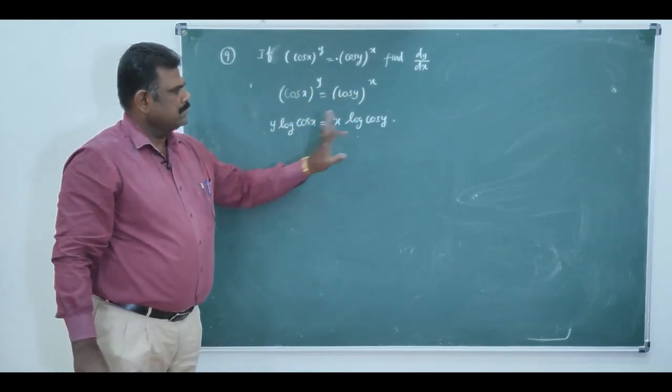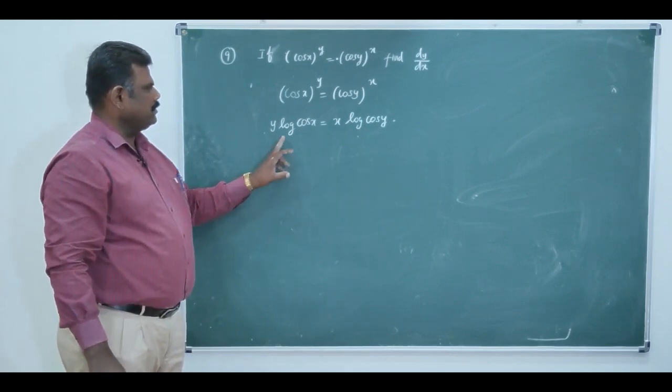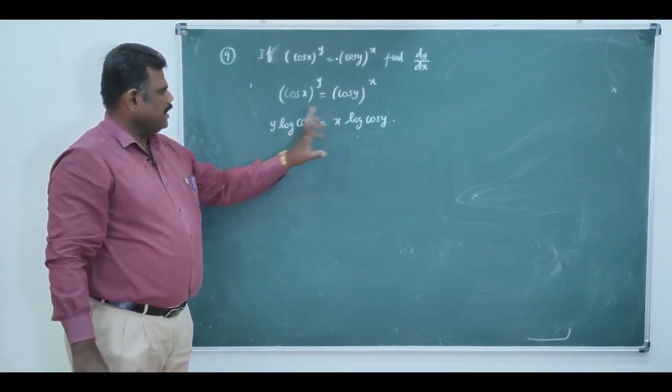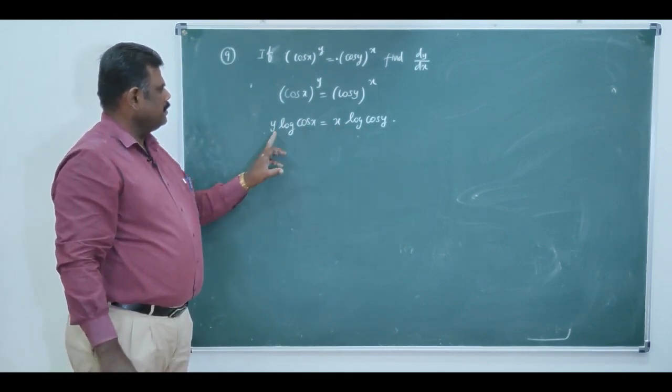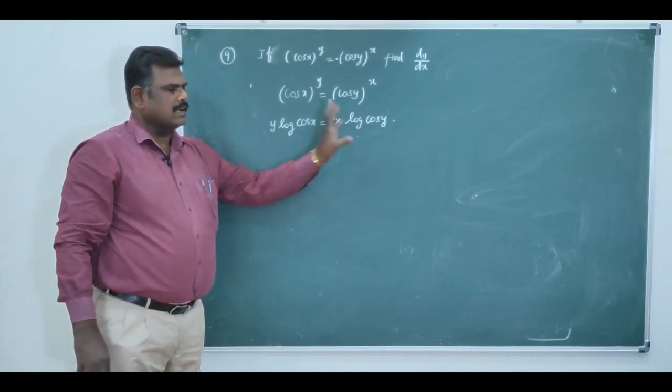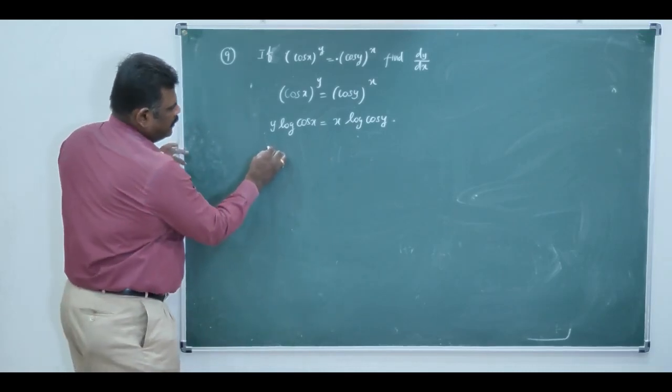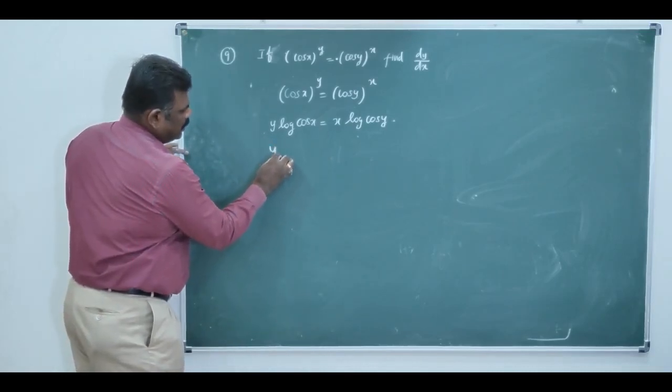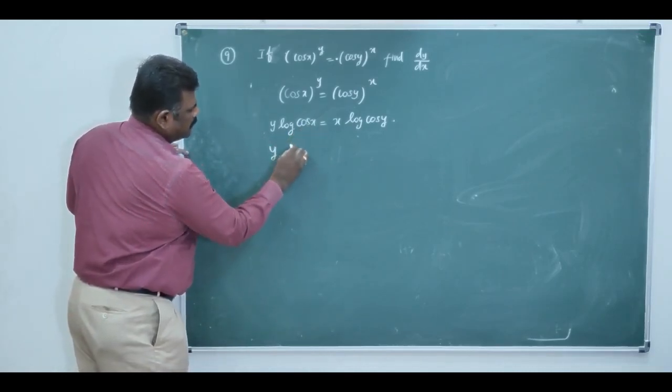Now, on both sides, differentiate with respect to x. The two sides, we are having two number of variables. One is y into log cos x. Right side, x into log cos y. Apply the derivative y into log of cos x.